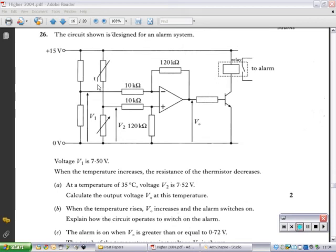At a temperature of 35 degrees Celsius, the voltage V2 is 7.52 volts. Calculate the output voltage V0 at this temperature. Okay.